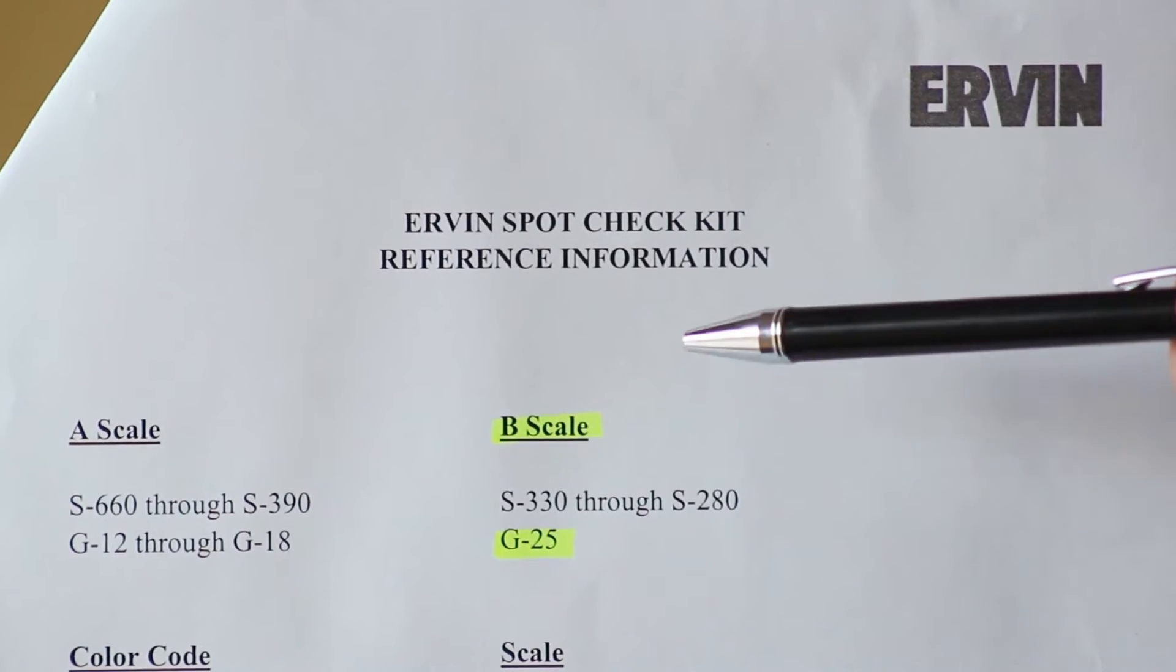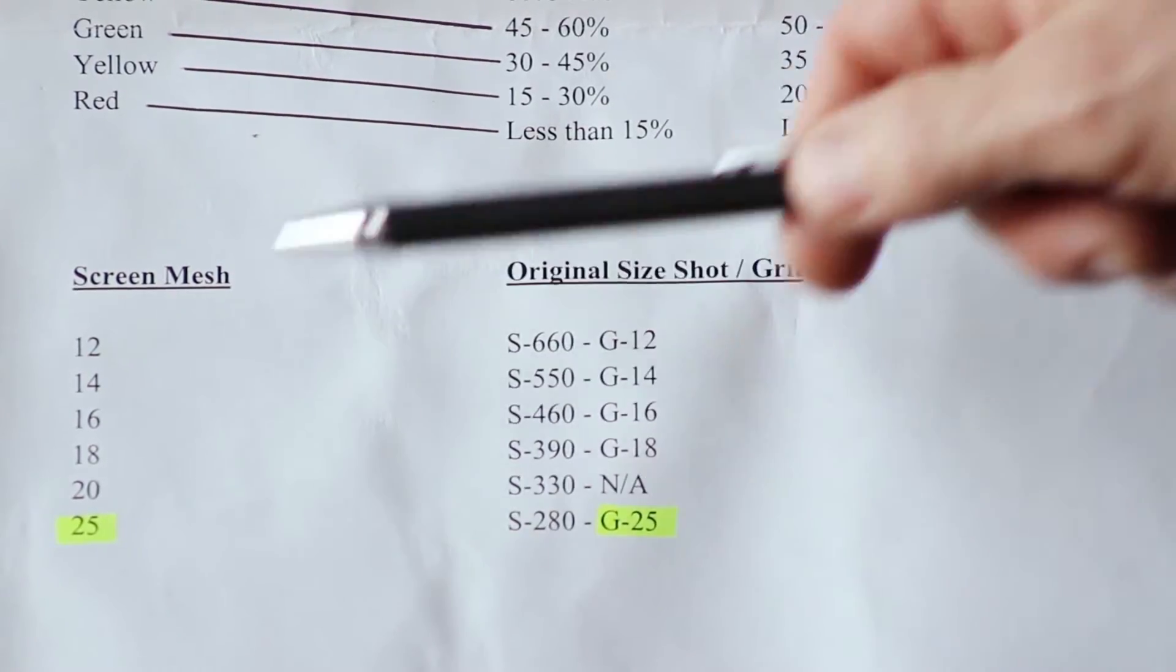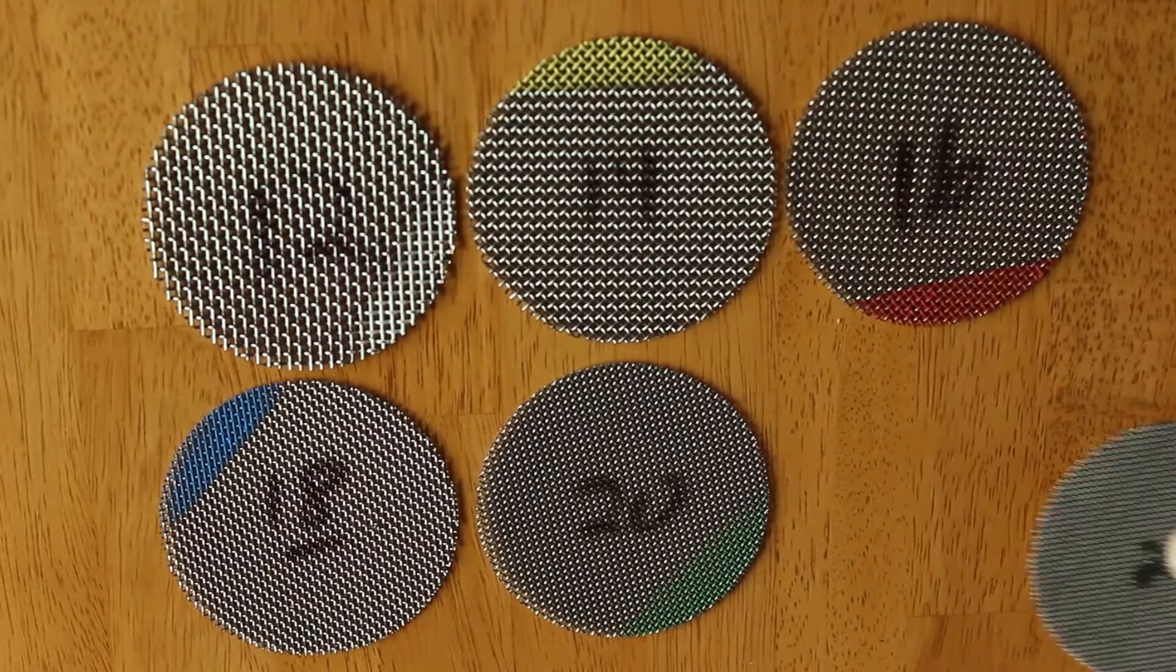For example, using new B scale grit at size G25, you would need to use screen number 25 with a black edge color.